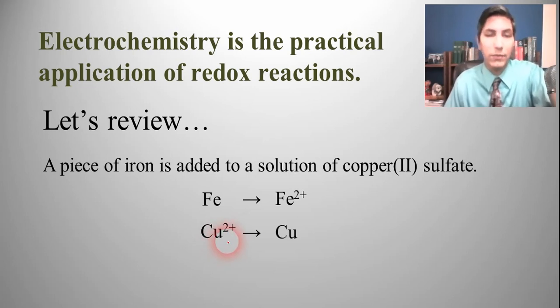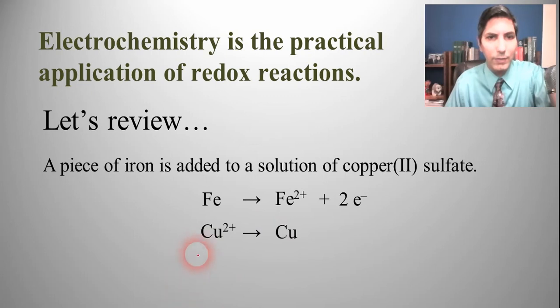Now we have to balance each of the half reactions. So in the first one here, we need two electrons on the right side to make that balance out in its charge. And then in the second one, we're going to need two electrons on the left side here to balance those out.